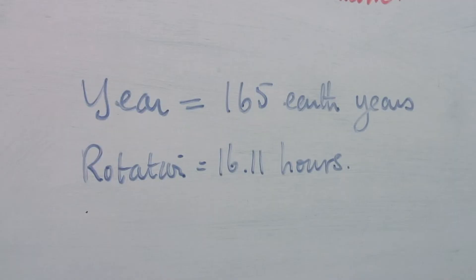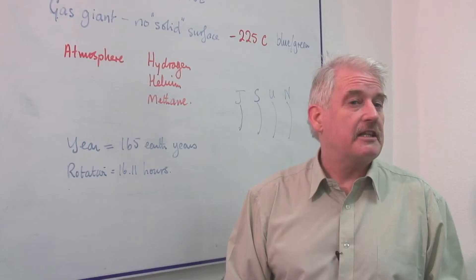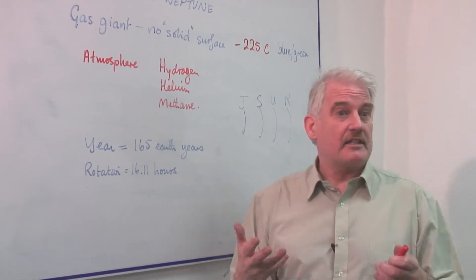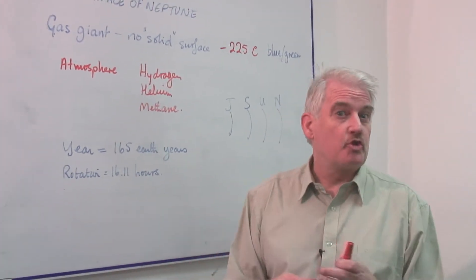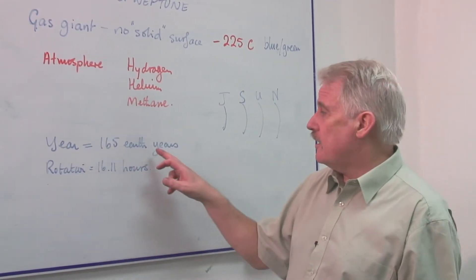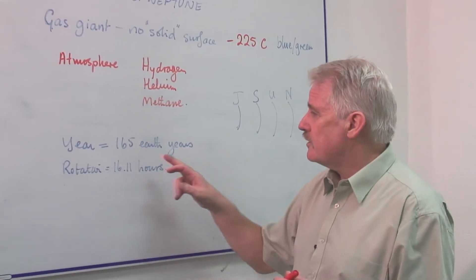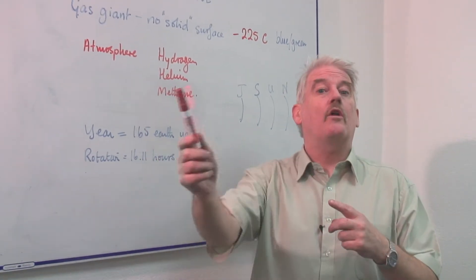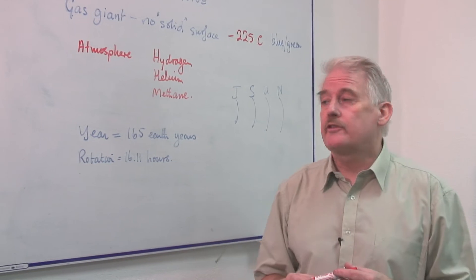It rotates in 16.11 hours. That's a little bit less than the Earth. So the day is quite a bit shorter than our day, but not significantly so. The year, however, is very different. The year is 165 Earth years, because it has a long, long way to go around the Sun.